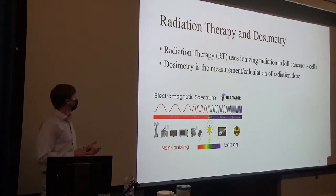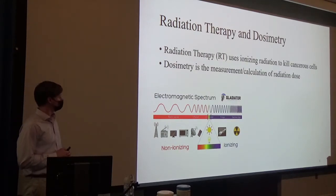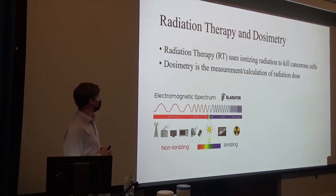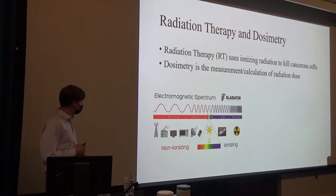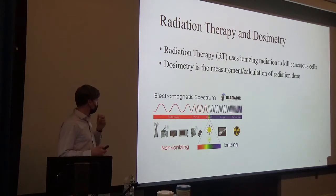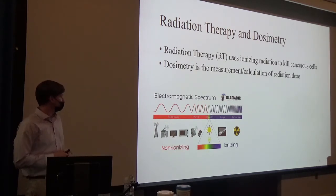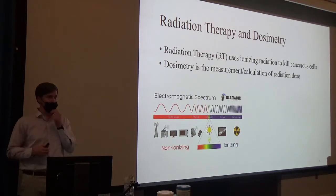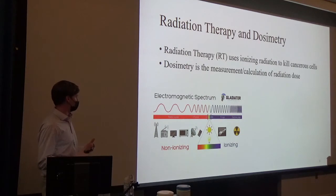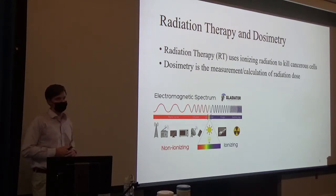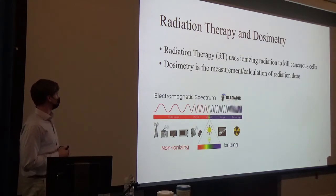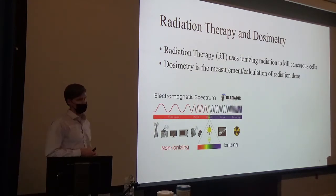Before we get into my project, we need to understand what exactly radiation therapy and dosimetry are. Radiation therapy uses ionizing radiation to kill cancerous cells. Ionizing radiation is part of the electromagnetic spectrum — it's just more energetic light, specifically gamma rays. We can strip electrons off atoms, breaking bonds, and cells can't repair at a rate that helps them survive. This happens in cancerous cells as well as healthy tissues, so we want to be very specific in where we target. That leads me to dosimetry, which is the measurement or calculation of radiation dose at a given location.